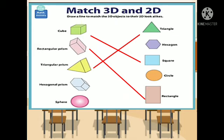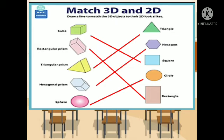The fourth one is hexagonal prism. So what is its 2D lookalike? Very good! It is hexagon. And the last 3D object is a sphere. What is its 2D lookalike? Wow, perfect! It is circle! So very good, class! You are now capable of matching 3D and 2D shapes.